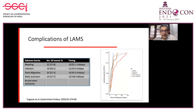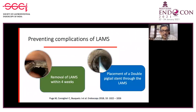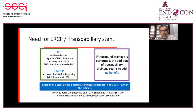Complications happen when the stent is placed for more than four weeks, and if it is more than 14 days, the risk increases. Adverse events were studied in a trial from Dr. Sham's group: if the pancreatic fluid collection is less than seven centimeters and removal is after four weeks, there is increased risk of adverse events. To prevent complications, the LAMS should be removed within four weeks, and placement of a double pigtail stent through the LAMS helps prevent complications.